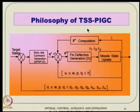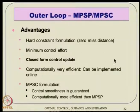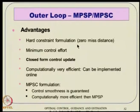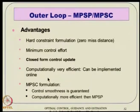The philosophy of this time-scale-separated partial IGC: we have already talked about that. The outer loop uses MPSC or MPSP — both techniques we have discussed in detail in previous lectures. Advantages of using these techniques in the outer loop: they have a hard constraint formulation allowing us to aim for zero miss distance, minimum control effort formulation, close-form control update giving less computational time, and can be implemented online. MPSC has a slight advantage that control smoothness is guaranteed by formulation and it is computationally slightly more efficient than MPSP.